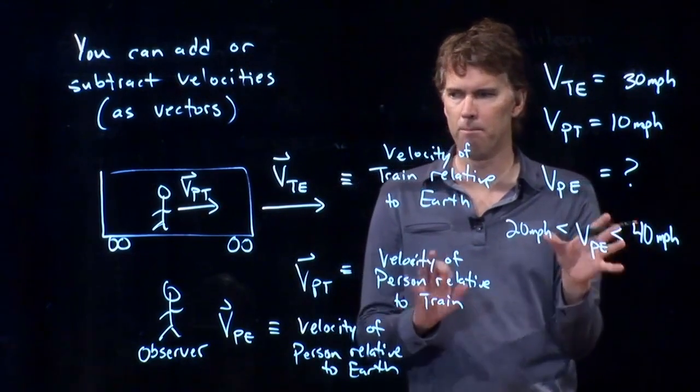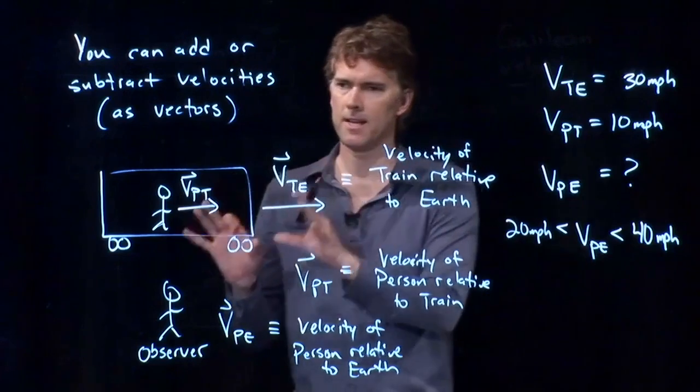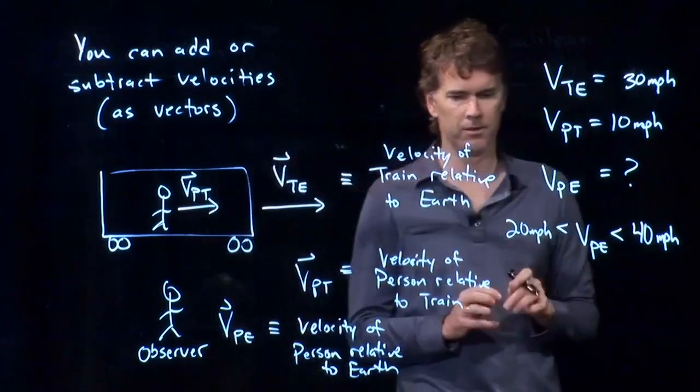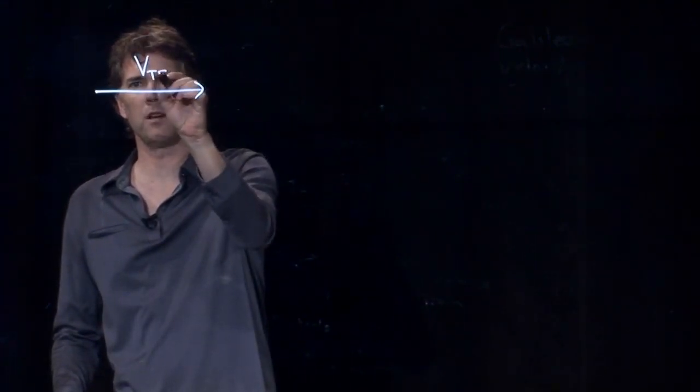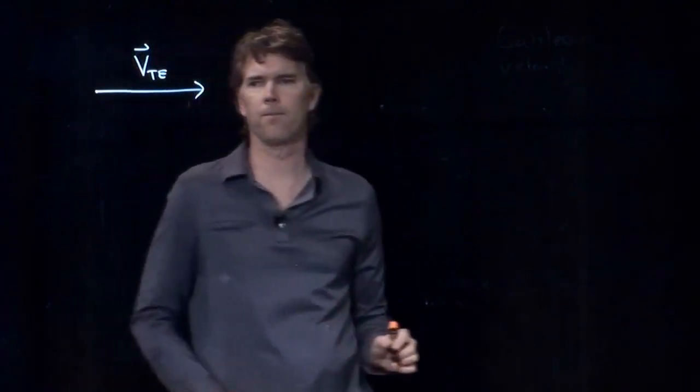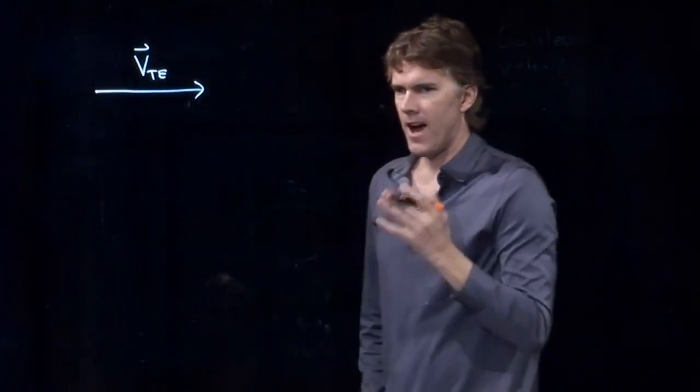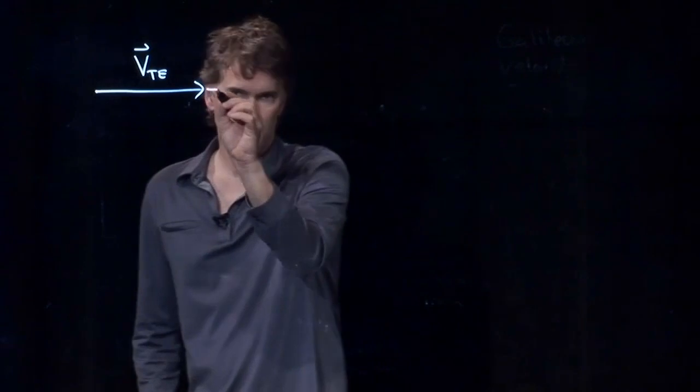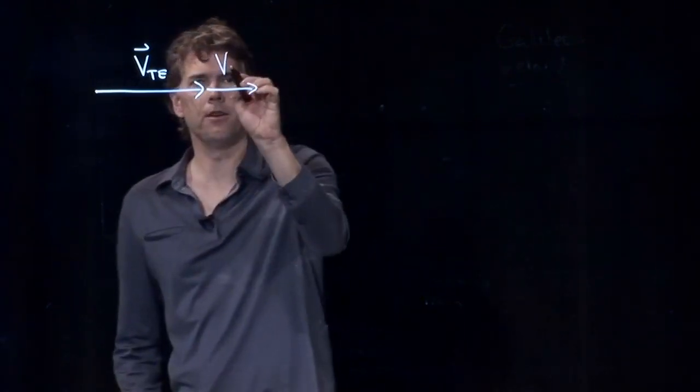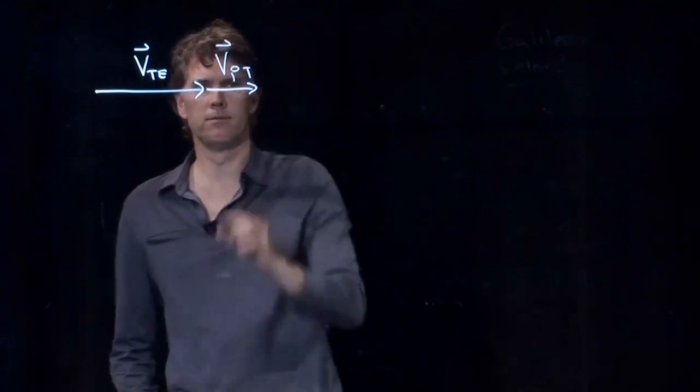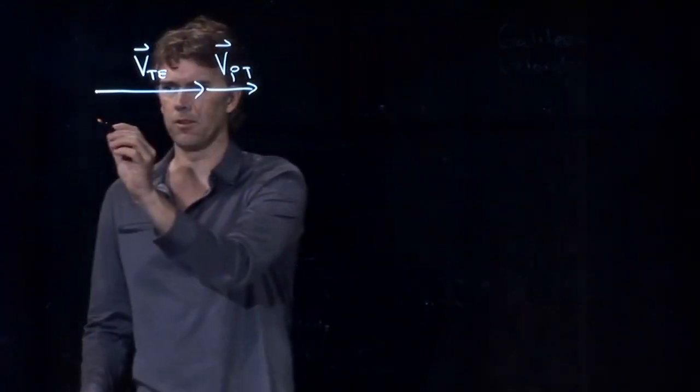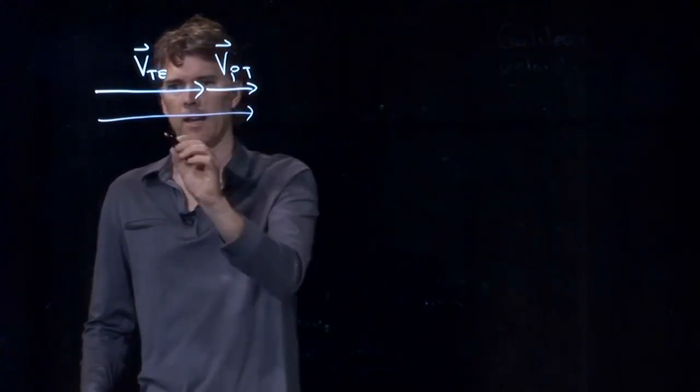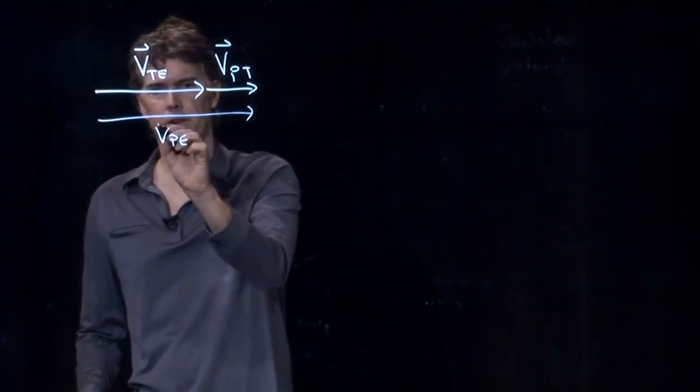Those are the bounds on V_PE. This already makes sense to you, but let's put it in the context of vectors. We said that the train is doing this. This is V of the train relative to the Earth. If I add to that the vector of the person relative to the train, then I just do a tip-to-tail method, and I add those two vectors up, and I get the velocity of the person relative to the Earth.